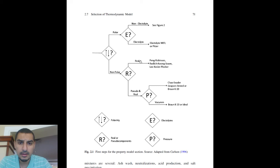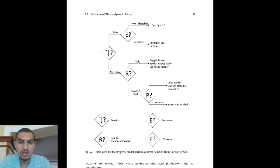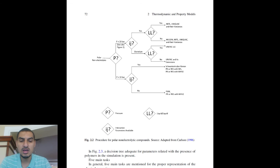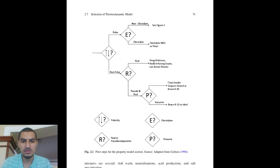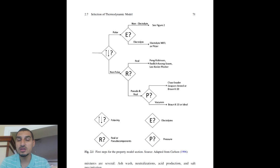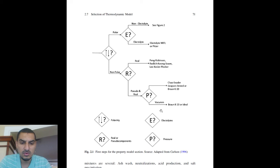For non-polar real components — like a benzene-toluene-xylene system — you go to the three cubic equations of state mentioned earlier. For pseudo components, which are components not in the Aspen Plus databank that you define yourself, you check pressure: if it is vacuum, you use Braun K10; if it is high pressure, you use the cubic equation of state options.